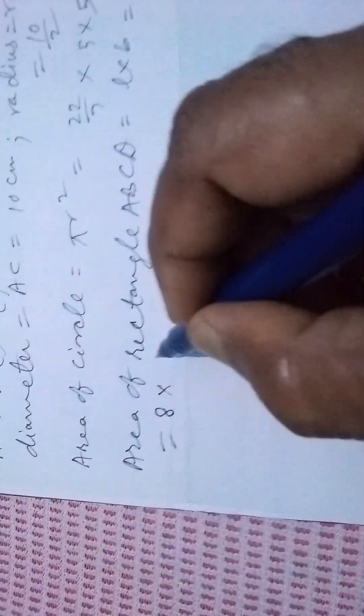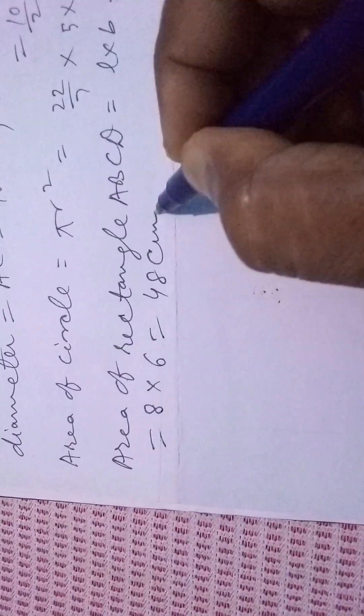AB is 8 centimeters, BC is 6 centimeters. That is 48 cm squared.